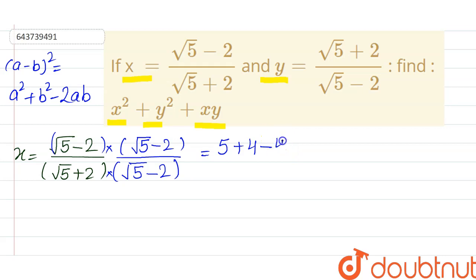In denominator, √5 squared is 5, 2 squared is 4, 5 minus 4 is 1, so we can leave it. So this is 9 - 4√5.